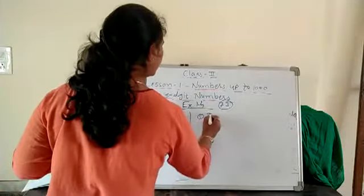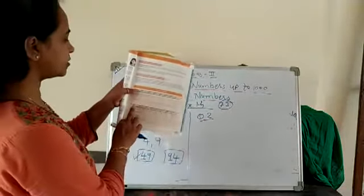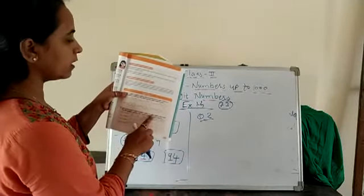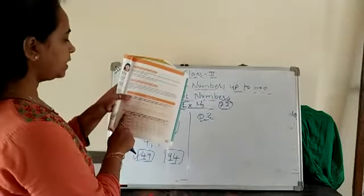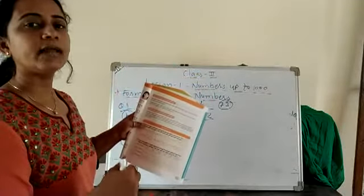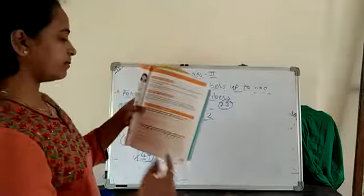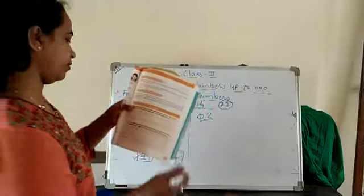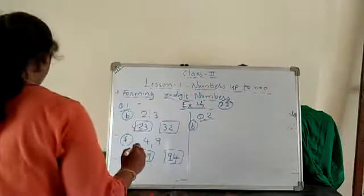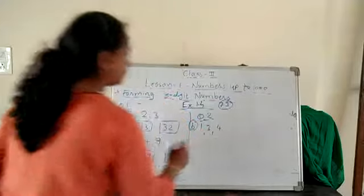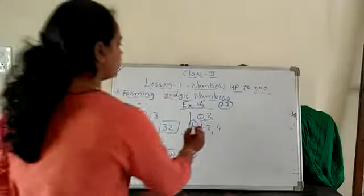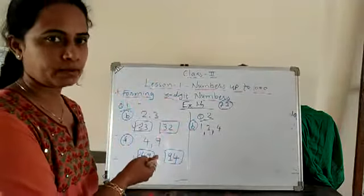Then question 2. Look here. Read the instruction: Form all possible 3-digit numbers using the given digits, only once. Tick the greatest number. The first one has been done for you. Isme bhi aapko pehla example saath karke diya hai. I will explain one, and another two — complete yourself.